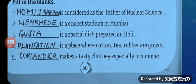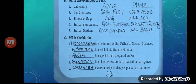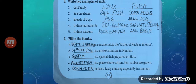Blank makes a tasty chutney specially in summer. The answer is Coriander, or Dhania — C-O-R-I-A-N-D-E-R. Here we finish the Fill in the Blanks.